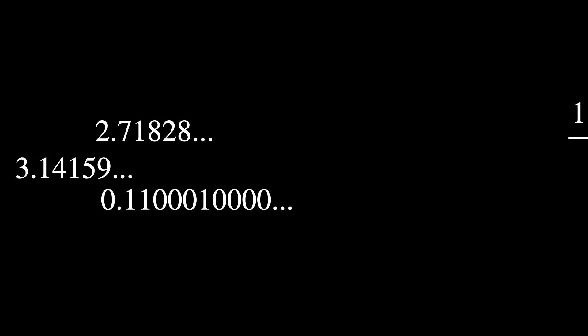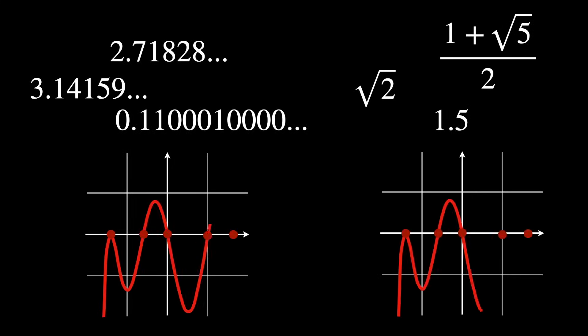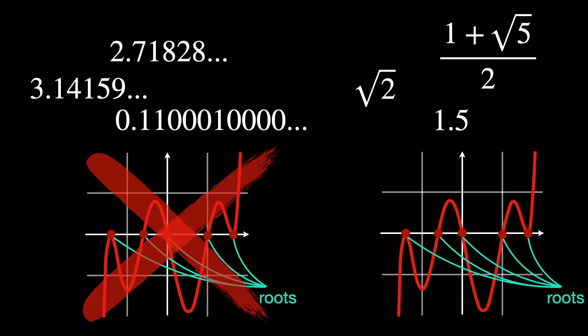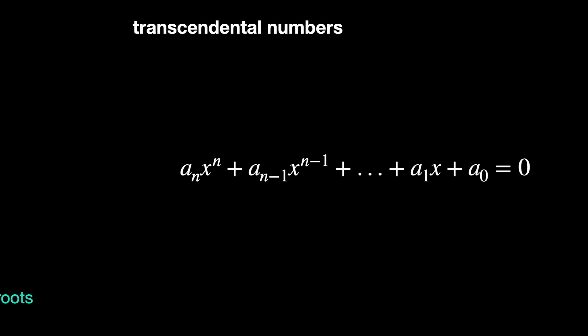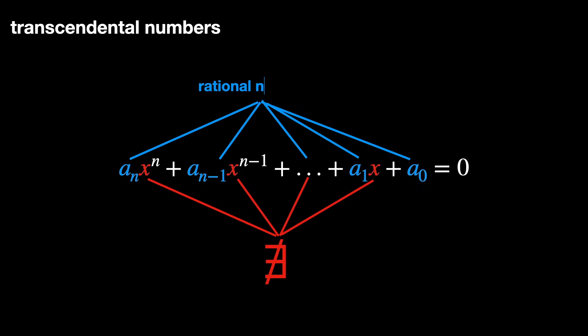The fundamental difference between transcendental and algebraic numbers is that a transcendental number is not the root of any non-zero polynomial with rational or integer coefficients. In other words, transcendental numbers cannot be expressed as the solution to an algebraic equation like this, where each coefficient a is a rational number and n is a positive integer.